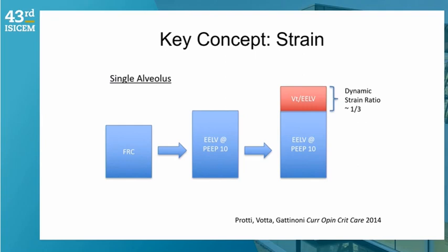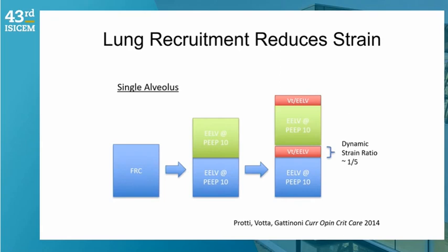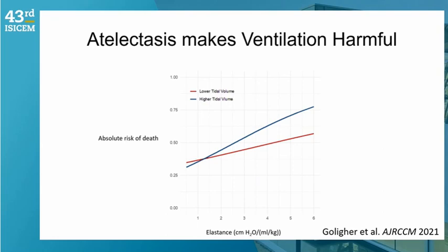A simple way to envision PEEP's effect on lung stress and strain: take a single lung unit, apply a PEEP of 10 from FRC, then apply a tidal volume on top—the strain ratio is approximately one-third. Now if by increasing PEEP you go from one lung unit to two lung units and apply the same tidal volume, that volume is now divided between two units, decreasing strain per unit and decreasing lung stress. That is the holy grail from a lung protection point of view when applying PEEP.